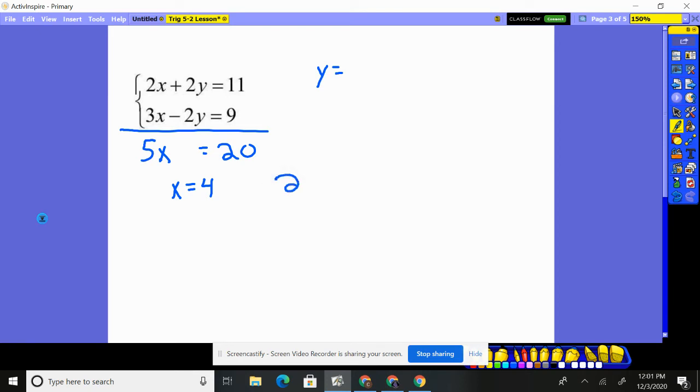Plug back into one of the equations. I'll go to the top equation. 2 times 4 plus 2y equals 11. 8 plus 2y is 11. Subtract 8. You're going to get 3 and then divide by 2. You're going to get 1 and a half. So, these intersect at 4, 1 and a half. Okay? If you plug in 4 for the x, 1 and a half for the y in both these, it'll make both equations true. And that's what we're searching for. The value of x and y that will make both equations true. That point of intersection.